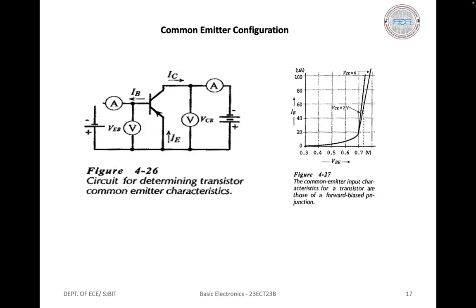For the common emitter input characteristics, VCE is held constant, VBE is set at convenient levels, and the corresponding IB levels are recorded; IB is then plotted versus VBE. The common emitter input characteristics are those of a forward-biased PN junction — noting that IB is only a small portion of the total current flowing across the base-emitter junction. For a given VBE, IB is reduced at higher VCE levels, because higher VCE produces greater depletion region penetration into the base, causing more charge carriers from the emitter to flow across the collector-base junction and fewer to flow out through the base terminal.